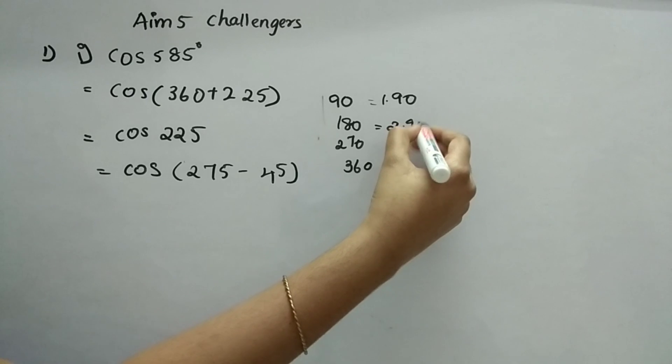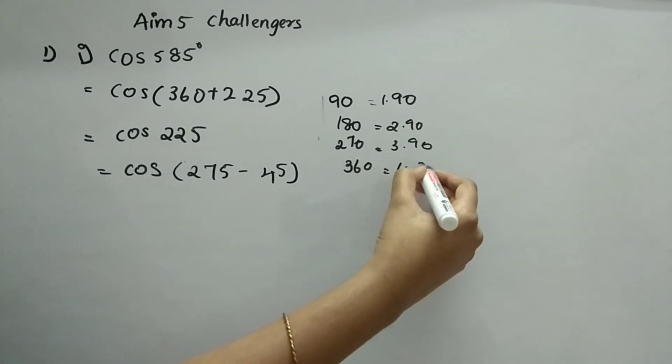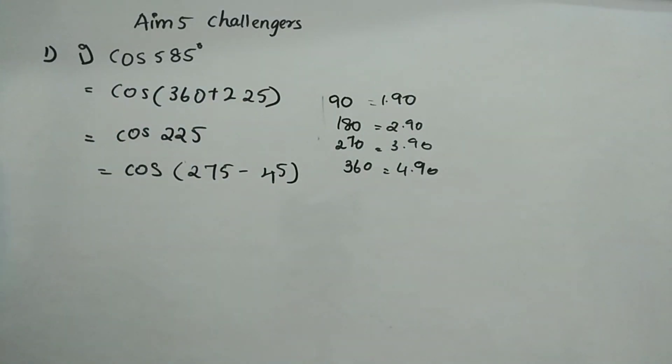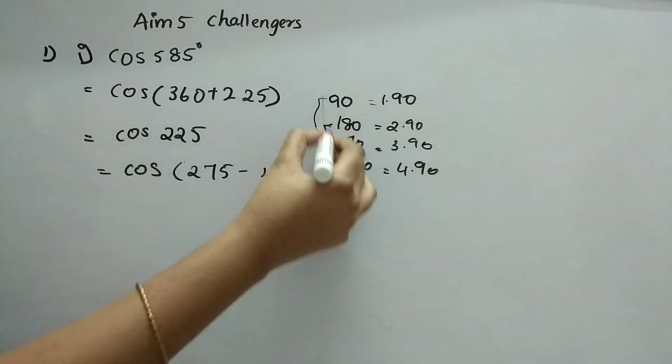180, 2 into 90. 270, 3 into 90. 360, 4 into 90. Here, you can observe 1 and 3. These two are odd multiples and these two are even.